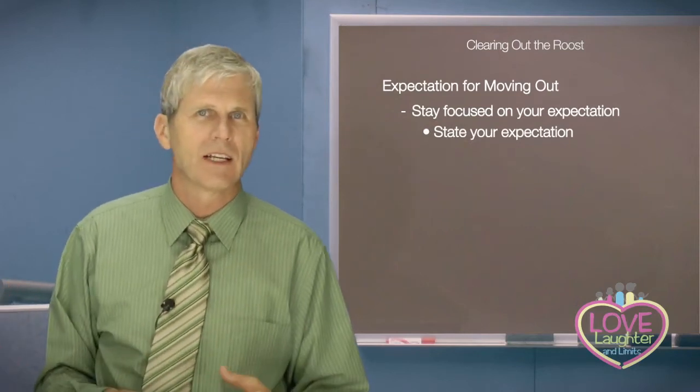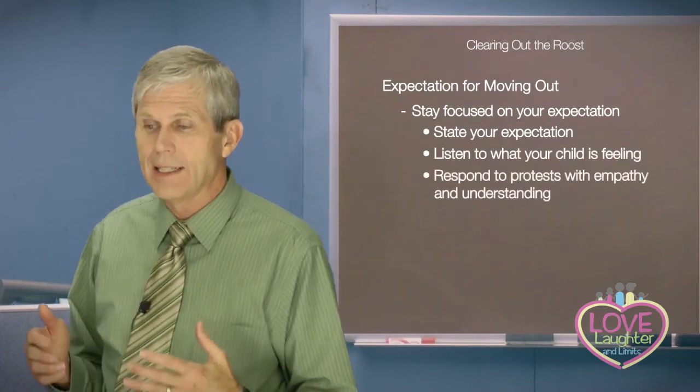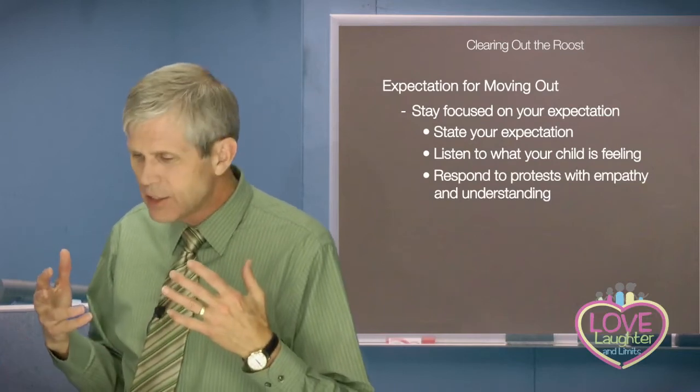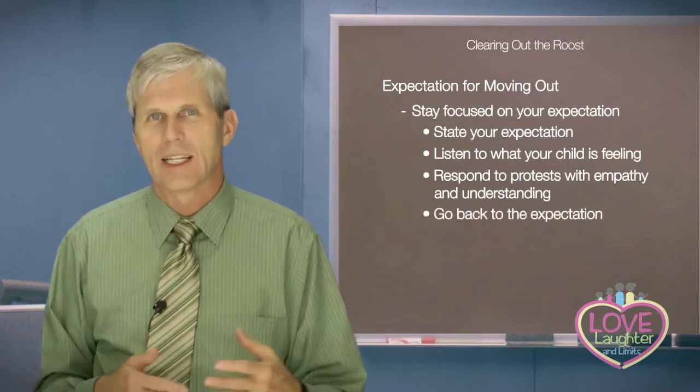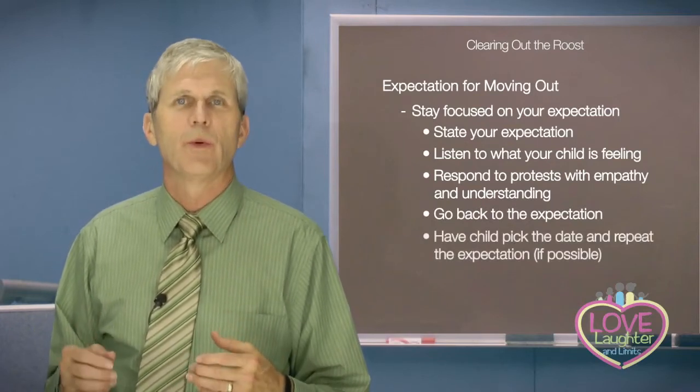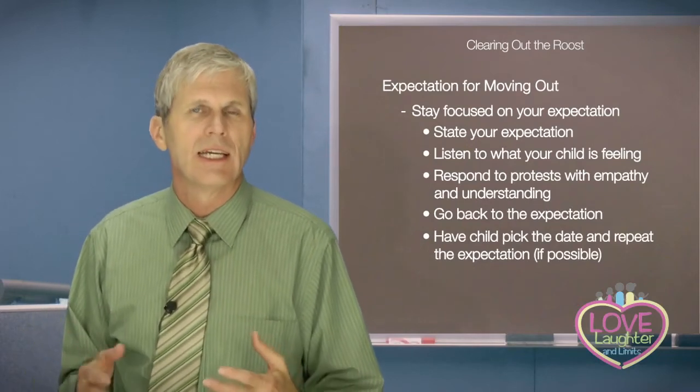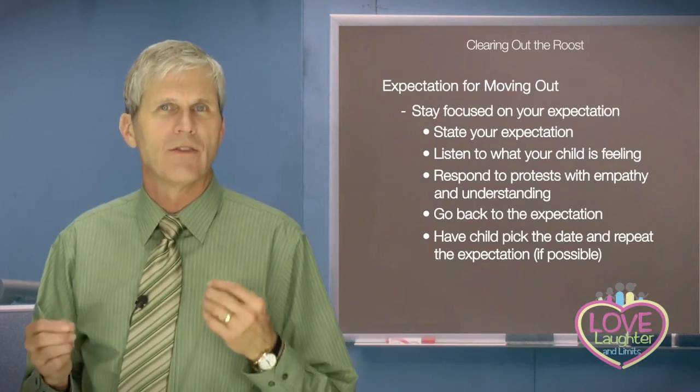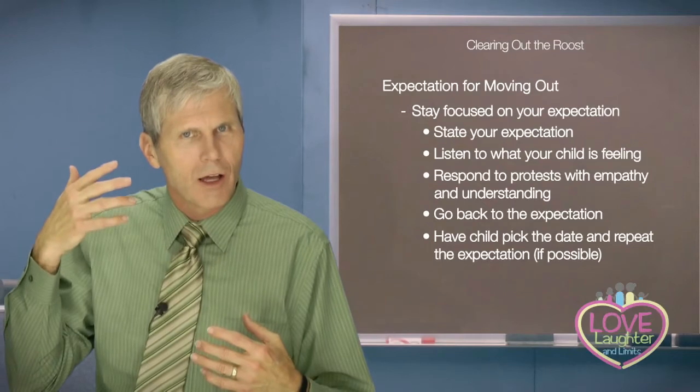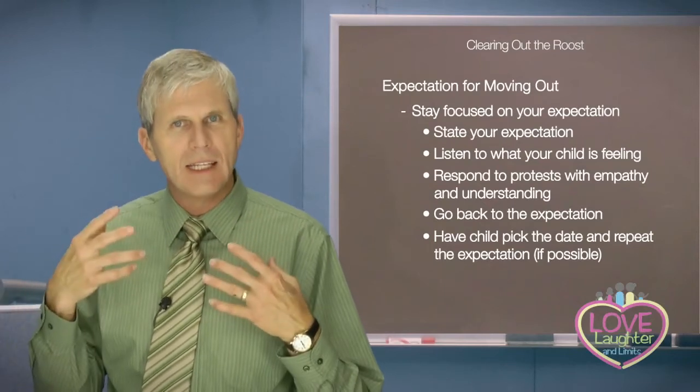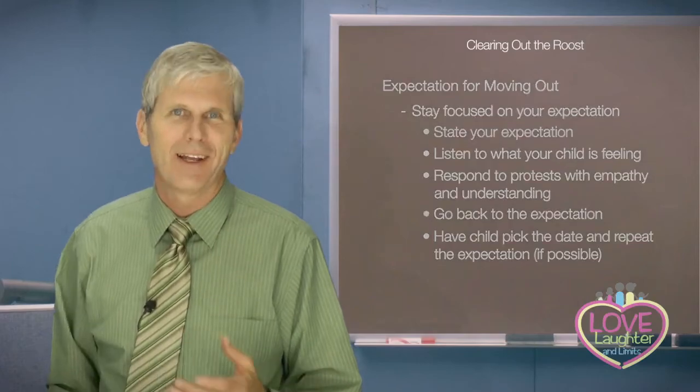So first thing is decide what you want and what you expect. And essentially that's that you want your child to set a date. And if the child won't set it, you're going to help them. You're going to set it for the child to move out. And you may say within the next eight weeks, two months, we want to give them a reasonable time for this to mull over with them and to work on them. You want to stay focused on your expectation. It doesn't matter what the child's complaining, what their reasons are, how unfair it is. You want to stay focused on your expectation, which is that the child will set a date or you'll have to set a date by which time they're going to be moved out and have accommodations of their own. And then you want to state that expectation. They're going to complain. They're going to protest. They're going to say this is so unfair. And you want to listen to what they're feeling and say, I can understand this feels unfair. Yeah, I can see that you'd like to be able to keep living at home. But then you want to go back to the expectation. And if at all possible, you want to have the child pick the date and repeat the expectation. And repeating the expectation is not just about confirming that the child heard it. There's mental processing that when a child will say what is expected of them, it increases the likelihood that they'll actually do it.